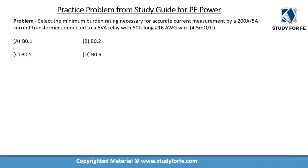Let us look at a practice problem from the study guide for PE Power. We are asked to select the minimum burden rating necessary for accurate current measurement by a 200-to-5-amp current transformer connected to a 5 VA relay with 50-foot-long number 16 AWG wire having an impedance of 4.5 milli-ohms per foot. We need to systematically process the information and use our burden formula to calculate the minimum burden rating.